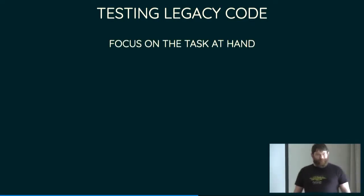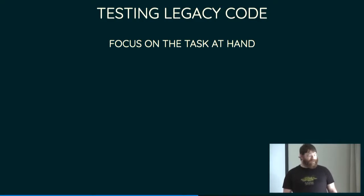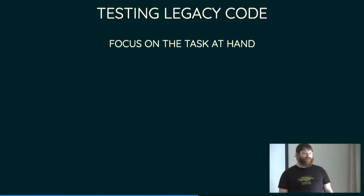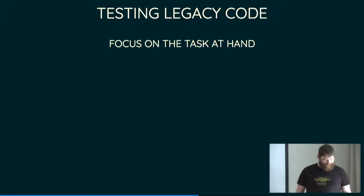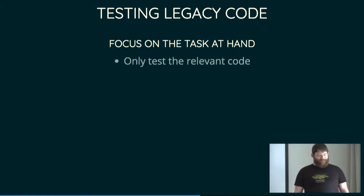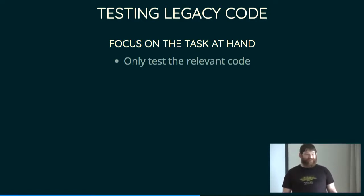So firstly, focus on the task at hand. Usually the reason you're touching legacy code — because it's a terrible thing to do and you will hate your life if you do it too much — is because you have a change that you need to make. In my case, I needed to allow this create VM function to let me add a second network interface so that I could have a private backlink between my virtual machines, so all my Docker containers talking to the database are not doing it over the same network interface as the front-end web server. So only test the code that you are changing now, the code that is relevant to your changes. It would be great to test all the other code as well, but if you had unlimited time, you may as well just rewrite from scratch anyway.